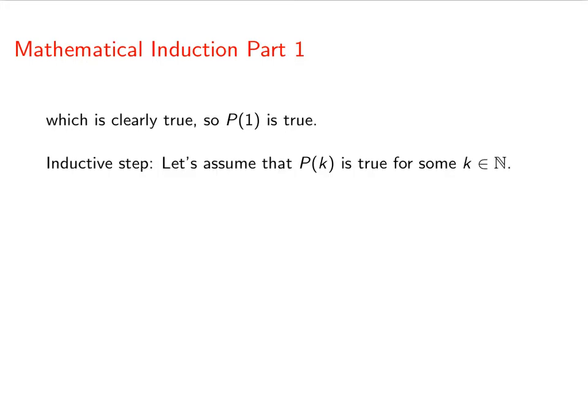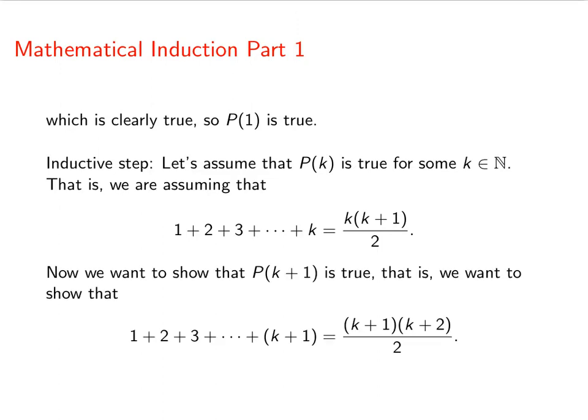Now for our inductive step. Let's assume that P(k) is true for some k in the natural numbers. So what we're assuming is that 1 plus 2 plus 3 all the way up to k is equal to k times k plus 1 over 2. And we want to show that P(k+1) is true. That is, we want to show that the sum formula works when we end at k plus 1.